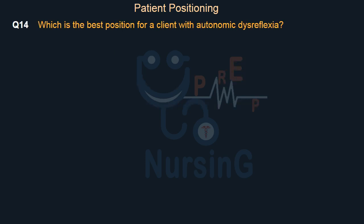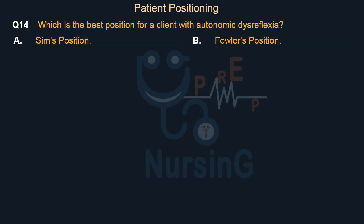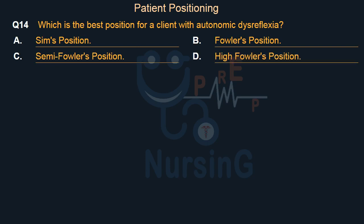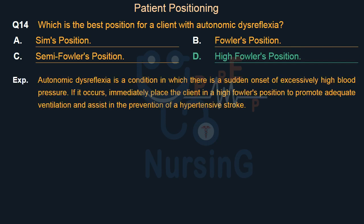Which is the best position for a client with autonomic dysreflexia? Option A, Sims position; Option B, Fowler's position; Option C, semi-Fowler's position; Option D, high Fowler's position. The right answer is Option D, high Fowler's position. Autonomic dysreflexia is a condition with sudden onset of excessively high blood pressure. If it occurs, immediately place the client in high Fowler's position to promote adequate ventilation and assist in the prevention of a hypertensive stroke.